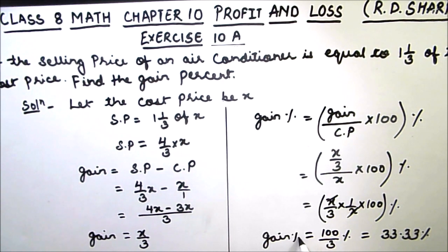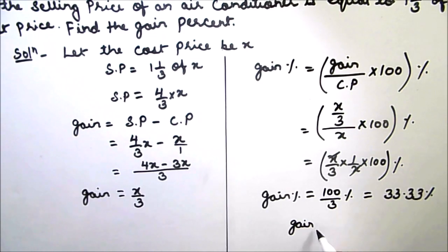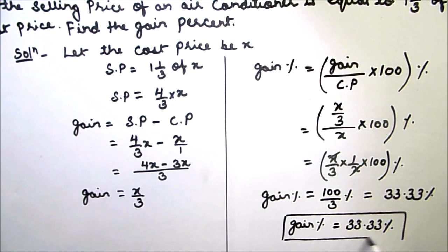This is the gain percent. So final answer is gain percent is equal to 33.33 percentage. So let us box the answer. This is how by finding the gain and putting the value of gain in the gain percent formula, we can find the gain percentage.